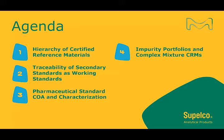In today's presentation, we will first look at the hierarchy of certified reference materials, then the traceability of secondary standards as working standards and what that means. I will explain how we produce the certificate of analysis and characterization of our pharmaceutical secondary standards, and at the end we will cover our impurity portfolios and what the mixed CRMs we have mean.